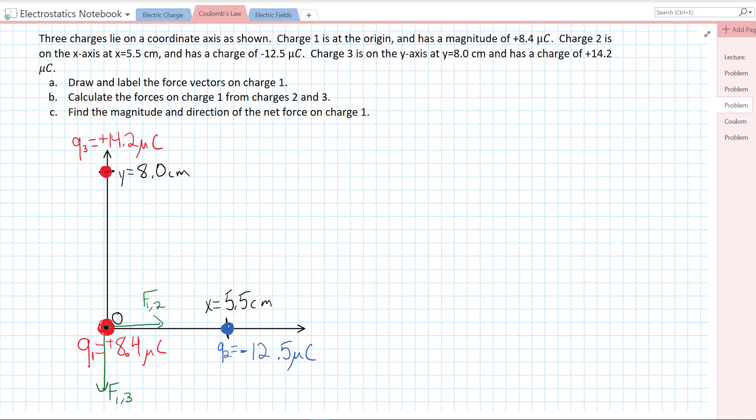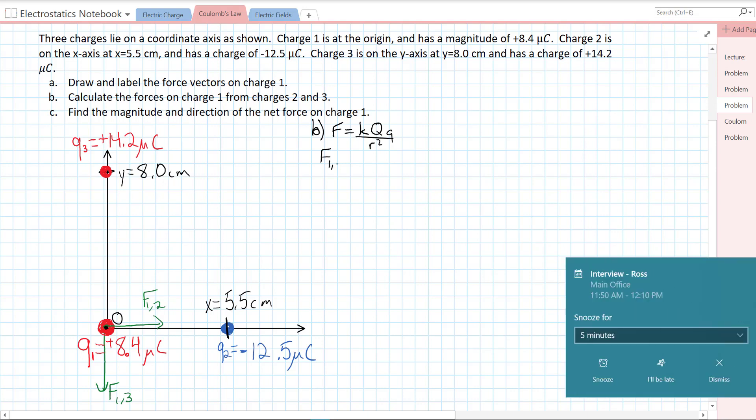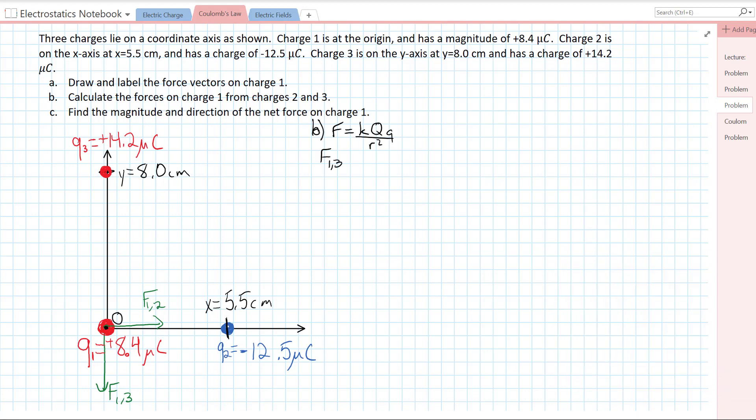Now, we need to find the magnitude of these forces. We know for any force by Coulomb's law, the electrostatic force is equal to K times Q1 times Q2 over R squared. Let's first find the force on one from three. We plug in K, Q, Q over R squared.